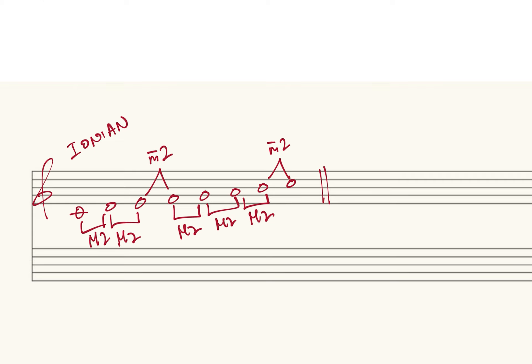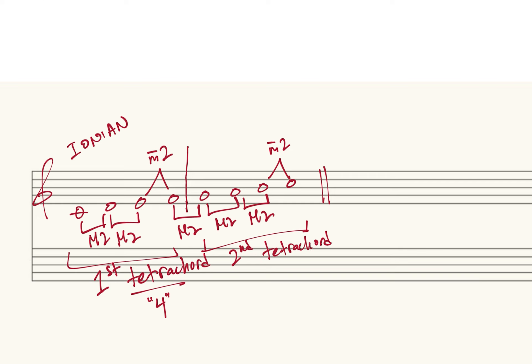I want to stick to the Ionian mode and split it into two groups of four notes each. The first four notes — C, D, E, F — form the lower or first tetrachord. The word 'tetrachord' literally means a group of four notes: 'tetra' means four, and 'chord' means a group of notes. These four notes can be expressed either melodically one after the other, or harmonically all at once. The upper group — G, A, B, C — is called the upper or second tetrachord.